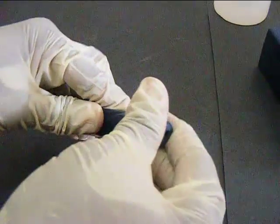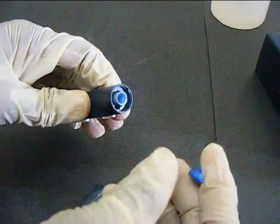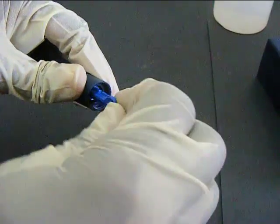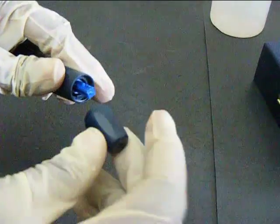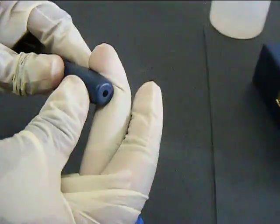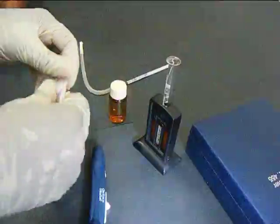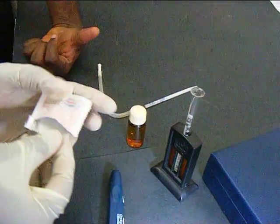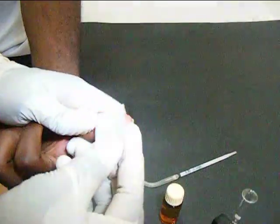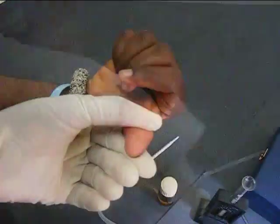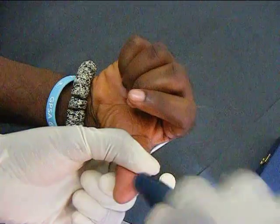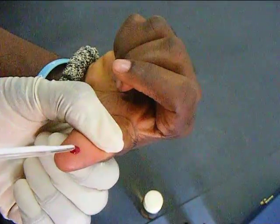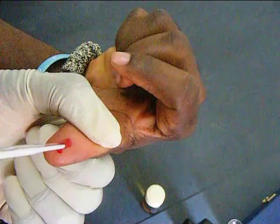A lancet is fixed onto the lancet holder and made ready for use. The lancet is used to prick the tip of the thumb and the blood is collected with a pipette up to the 20 microliter mark.